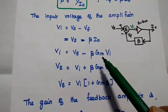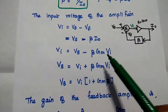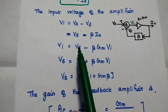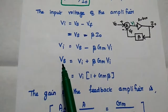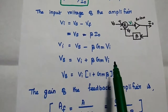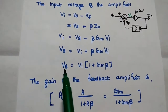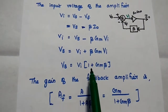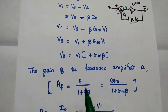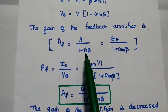IO can be replaced with the value Gm Vi. Next, we move the Vi term to the other side; this term becomes positive. From this, we can get the value of Vs that is equal to Vi plus beta Gm Vi. Then we can take Vi as a common term: Vs is equal to Vi into 1 plus Gm beta. From this, we can get the value of the gain of the feedback amplifier.